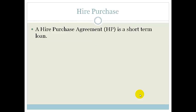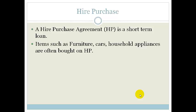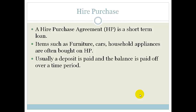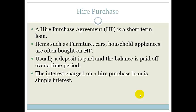A hire purchase is an agreement and it's a short-term loan. Items such as your furniture, your cars, your household appliances are often bought on HP, which is a shortened term for hire purchase. Usually a deposit is paid and then the balance is paid off over a time period. The interest charge on a hire purchase loan is plain simple interest. You need to know that, because questions may say John bought something on hire purchase, and you need to know that hire purchase is simple interest.